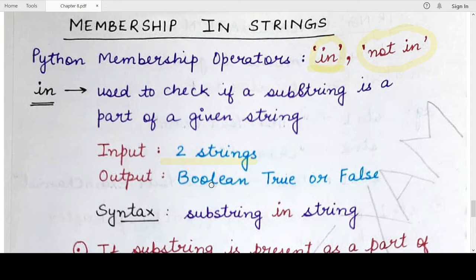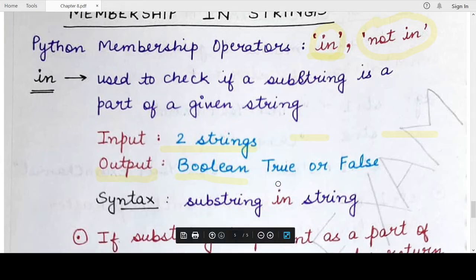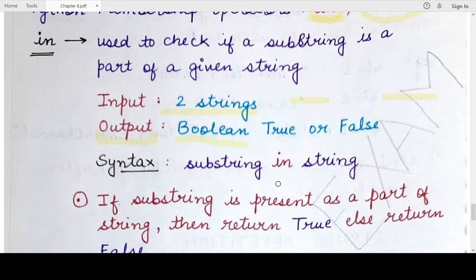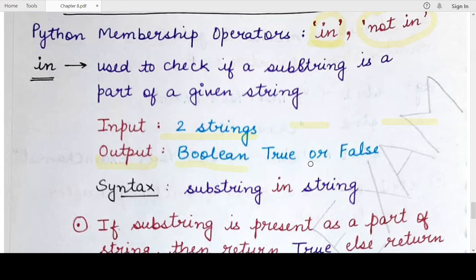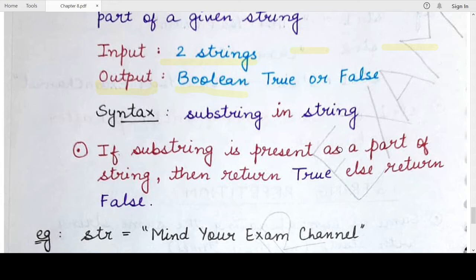Both membership operators take as input two strings. One string is specified on the left side of the operator and the second string is specified on the right-hand side. The string on the left-hand side is the string we want to check whether it is present inside the second string. The output of these membership operators is the boolean `True` or `False`. If we use the `in` operation and the return value is `True`, it means the contents of the first string are present in the second string; if `False`, they are not.